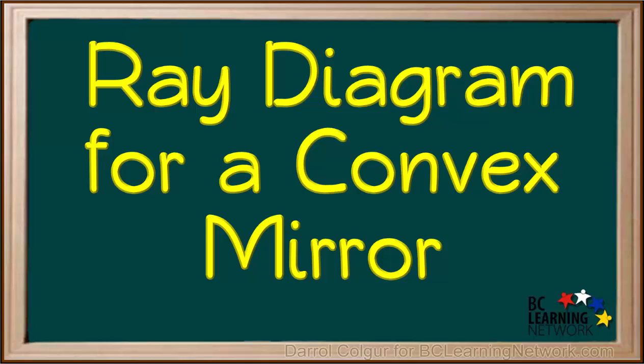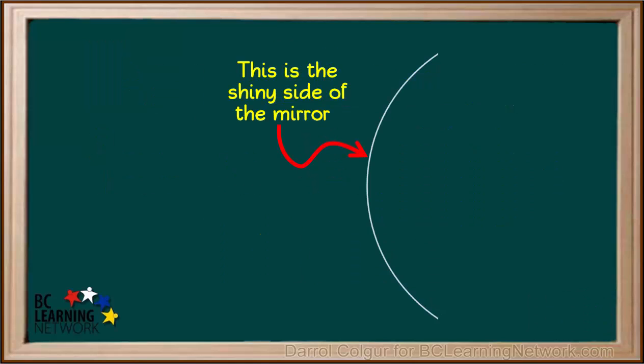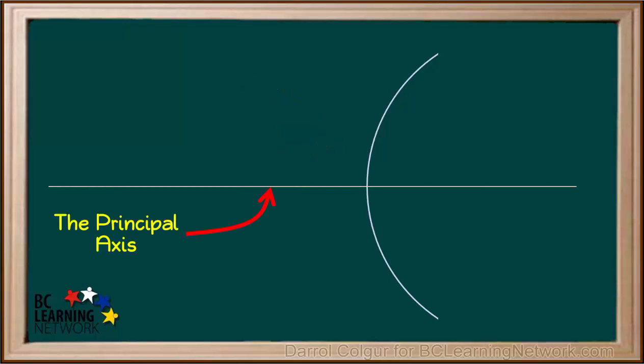Here we'll show you how to draw a ray diagram for a convex mirror. In a convex mirror, this is the shiny side of the mirror. Here is the principal axis going through the middle of the mirror. Even though we don't see this side of the mirror that's not shiny, the right side in this case, the focal point F is still drawn over here in our ray diagram.